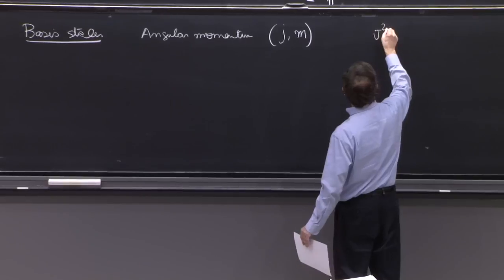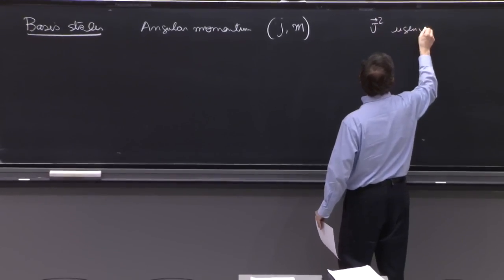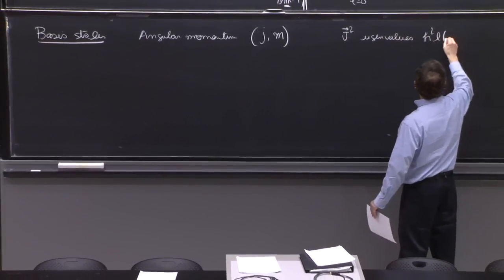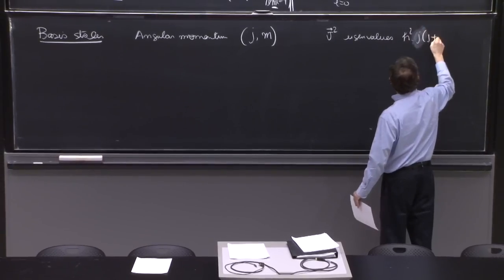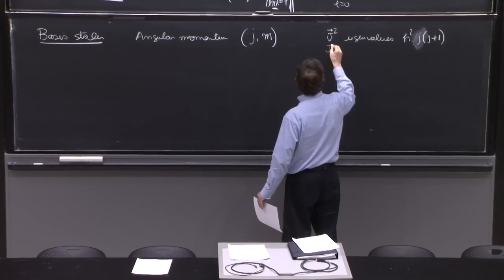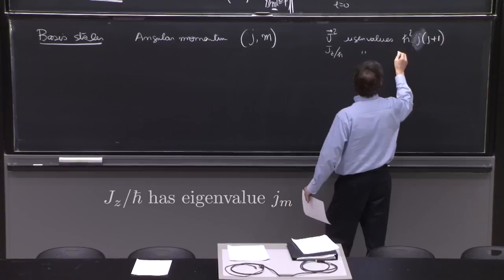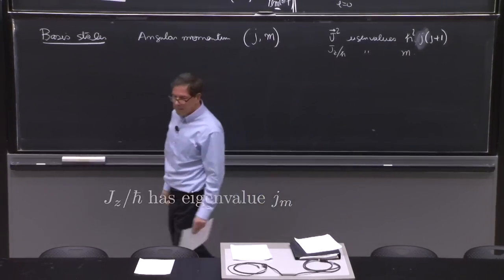j squared, the angular momentum has eigenvalues h squared, j times j plus 1. And jz over h bar has eigenvalues m. That's the notation for angular momentum.